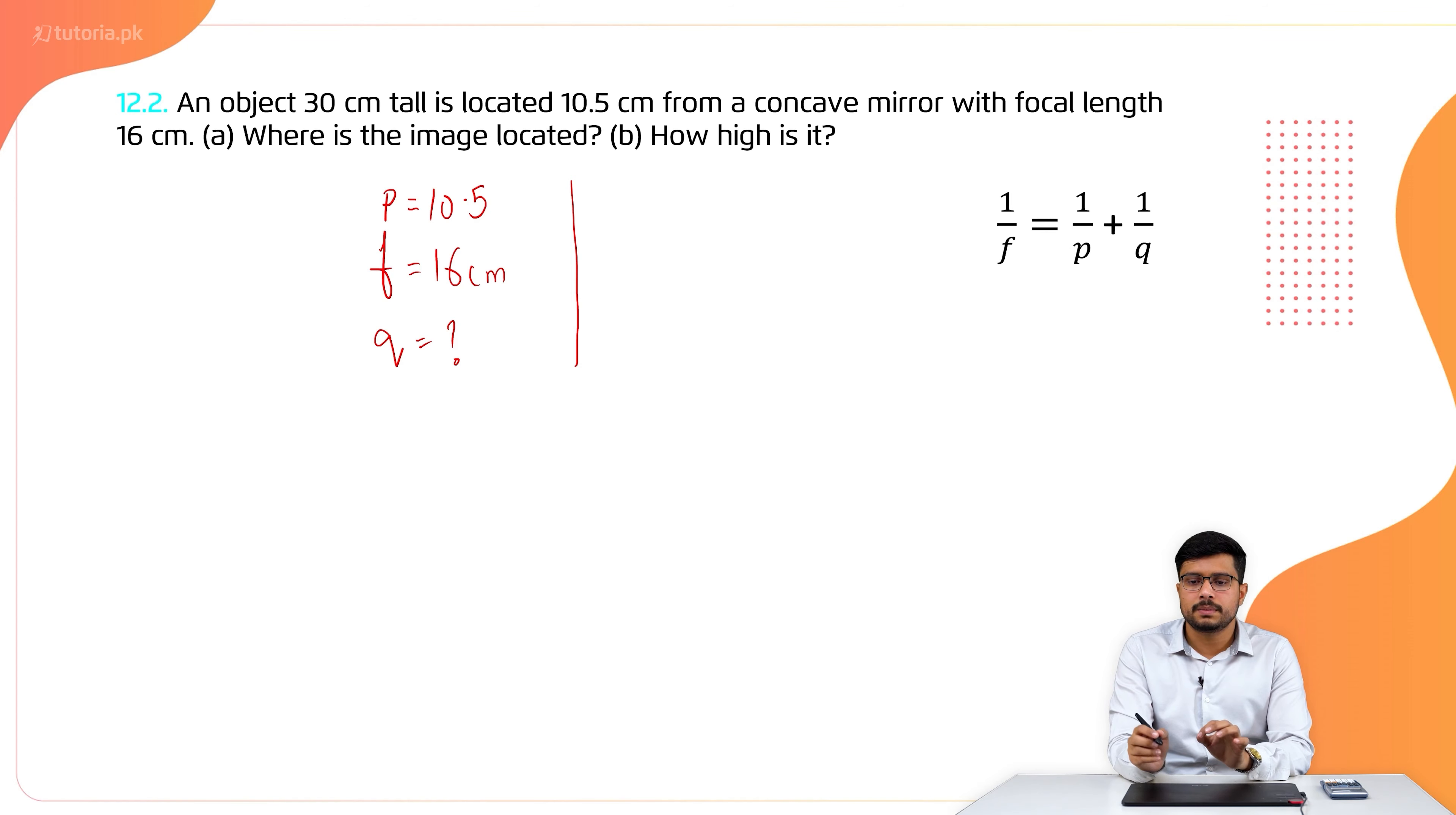If we have Q, then 1 over Q is equal to 1 over F minus 1 over P. We have 1 over 16 minus 1 over 10.5. When we take the reciprocal, the value of Q is equal to minus 30.5.